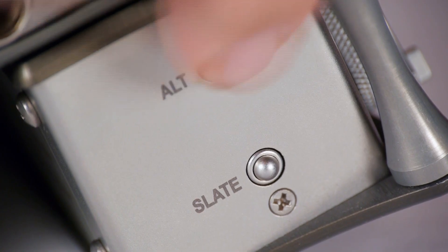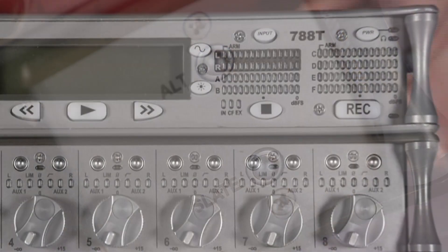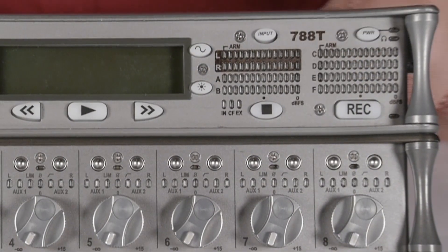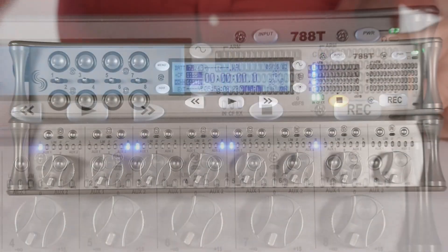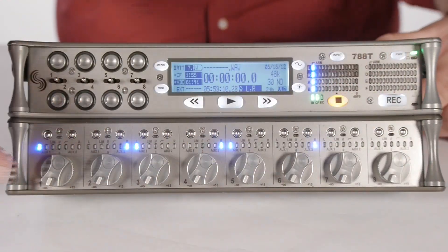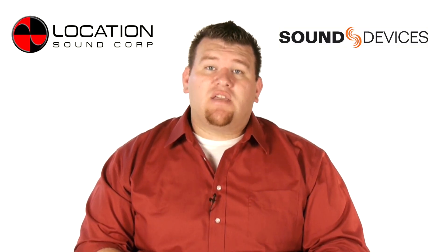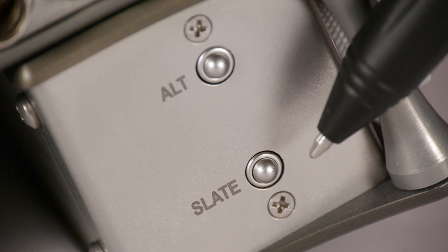To return to the main view, press the ALT button again. Please note that when you power up the 788, by default the CL8 will always go to its main view. Also located on the left side of the CL8, right under the ALT button, you'll find the slate mic button.